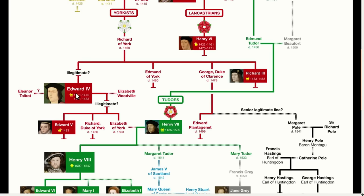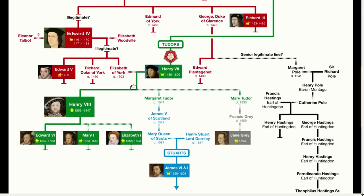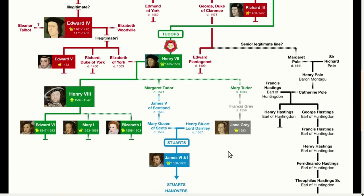According to some records from the time, Edward's father was off fighting at a location about 100 miles from where his mother was living for about a five-week period around the time Edward IV was likely conceived. The conclusion is that his mother must have had an affair and that Edward's biological father was therefore someone else. If this were true, Edward would indeed be illegitimate, and if he was, his children would also be illegitimate — including Elizabeth of York. That means everyone from that point forward would also be illegitimate, so we would have no Tudors, no Stuarts, no Hanovers, no Windsors, no Queen Elizabeth II.